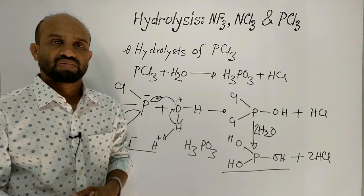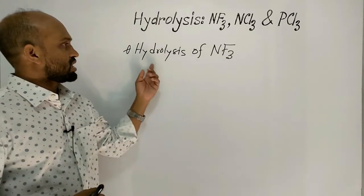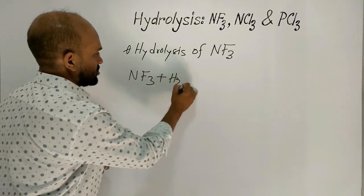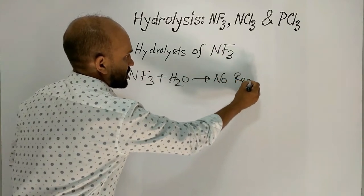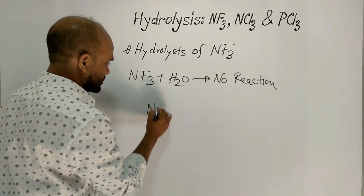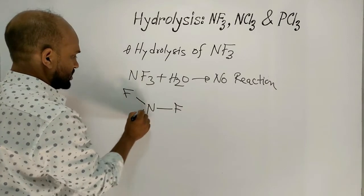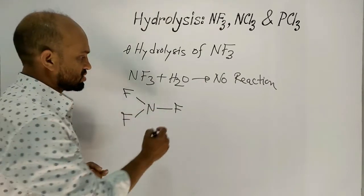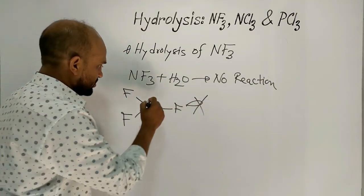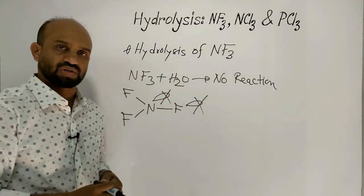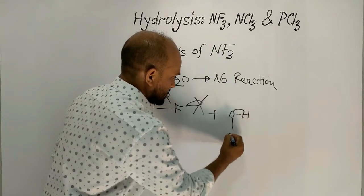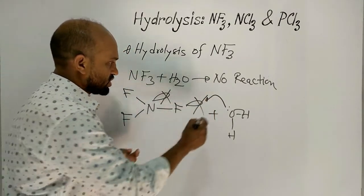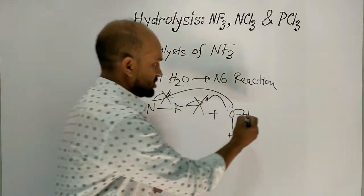Now let's look at the hydrolysis of Nitrogen Trifluoride. Nitrogen Trifluoride plus water — actually, no reaction happens here. Because from the configuration of Nitrogen and Fluorine, we learned that Fluorine has no vacant d orbital, and at the same time Nitrogen has no vacant d orbital. That is why Oxygen cannot get a chance to form a coordinate covalent bond with Fluorine or with Nitrogen.